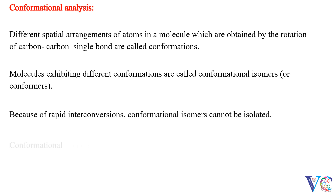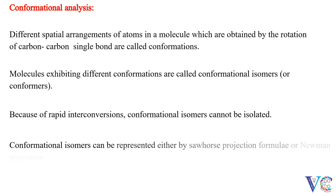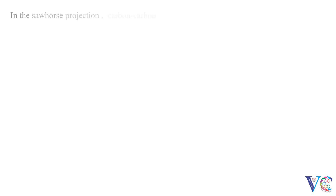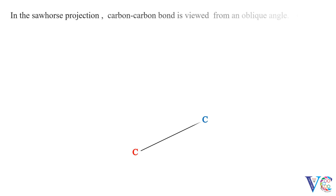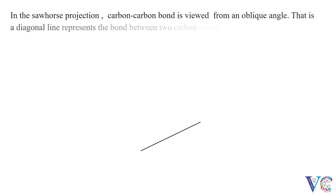Conformational isomers can be represented either by sawhorse projection formulae or Newman projection formulae. In the sawhorse projection, the carbon-carbon bond is viewed from an oblique angle — that is, a diagonal line represents the bond between the two carbon atoms.